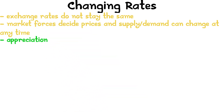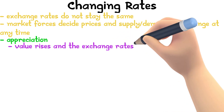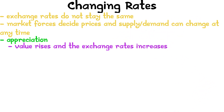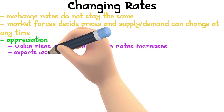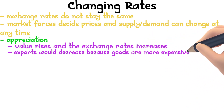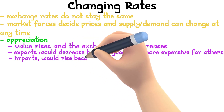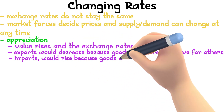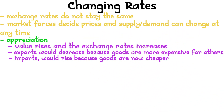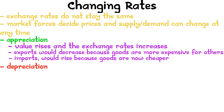The appreciation of a currency is where the value rises and the exchange rate increases. If there is an appreciation, exports would decrease because goods are more expensive for other countries according to exchange rates. Imports, however, would rise because goods become cheaper thanks to the exchange rate.